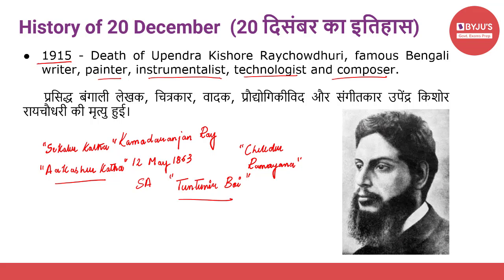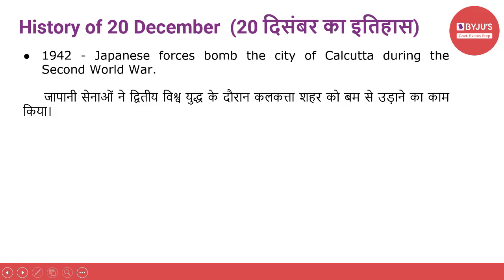Upendra Kishore Ray Chaudhary passed away on 20 December 1915. Our next important event is from 1942, when Japanese forces bombed the city of Calcutta during the Second World War. Bombers of the Imperial Japanese Army Air Force bombed the city of Calcutta, damaging its infrastructure. India was a de facto ally of the British Empire and was a major aerial and land supply route to China for the allied powers, crossing the Himalayas to send supplies in the war against Japan.